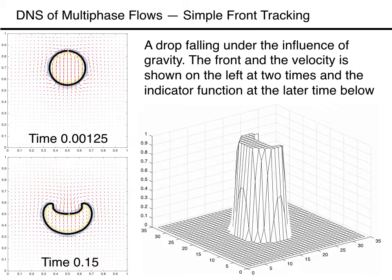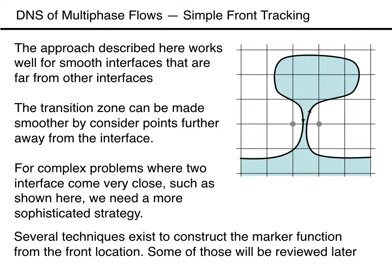In the absence of such problems, the front tracking will allow us to keep the marker and thus the density sharp for essentially all times. Constructing the marker function or the density given the interface can obviously be done in several different ways. One of the main considerations is that we need to be able to treat interfaces that are very close to each other in a reasonable way.